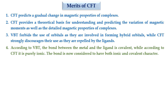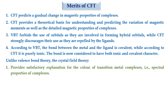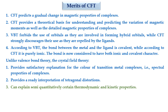According to valence bond theory, the bond between the metal and the ligand is covalent, while according to CFT it is purely ionic. According to molecular orbital theory, the bond is considered to have both ionic as well as covalent character. Unlike valence bond theory, crystal field theory provides a satisfactory explanation for the color of transition metal complexes, that is the spectral properties of the complexes. It provides a ready interpretation of tetragonal distortion, and it can explain semi-quantitatively certain thermodynamic and kinetic properties.